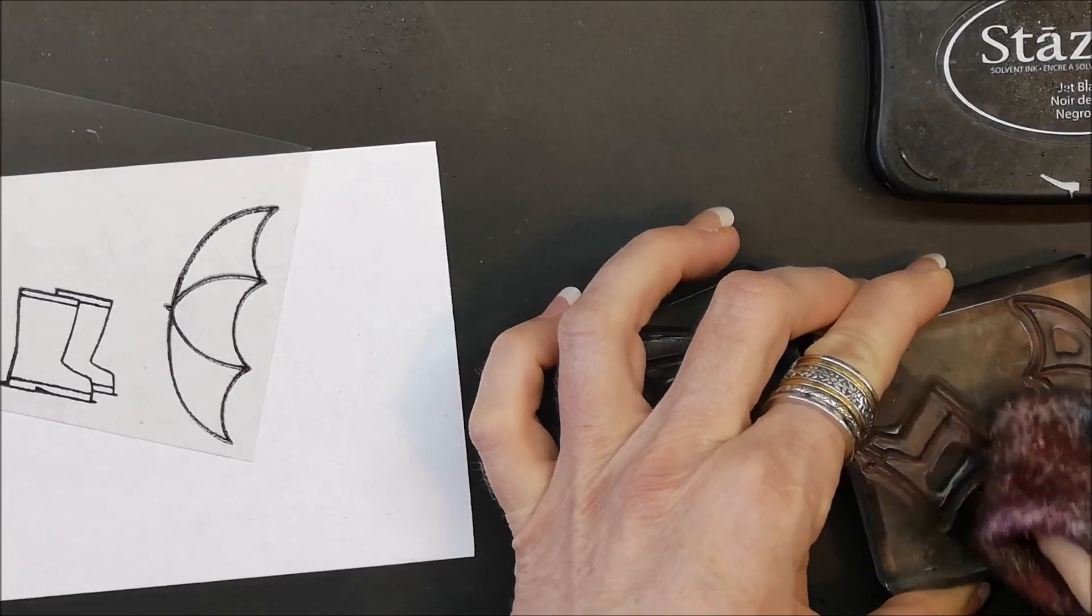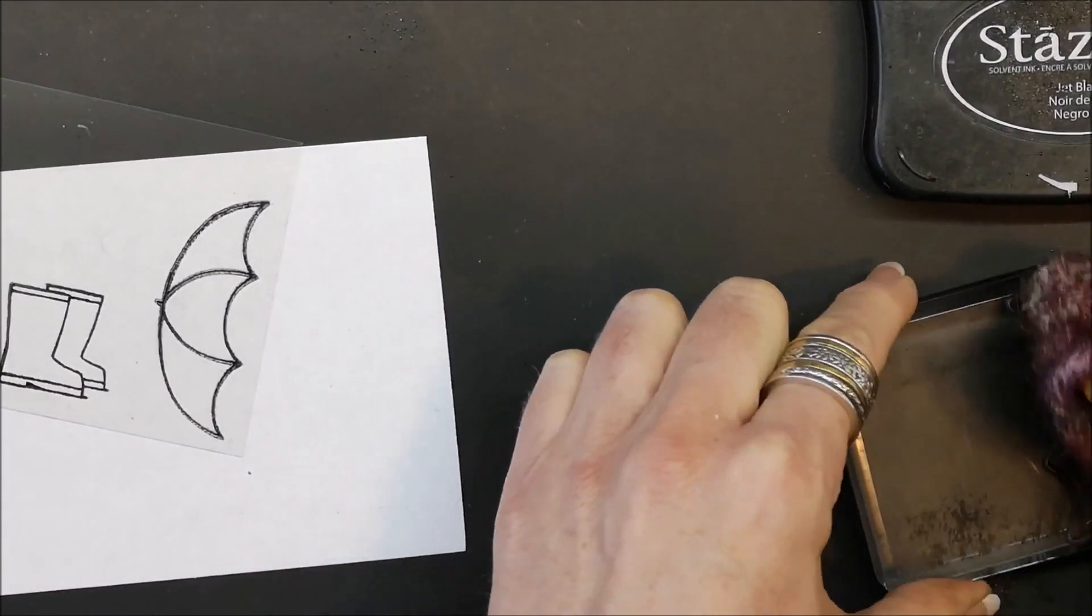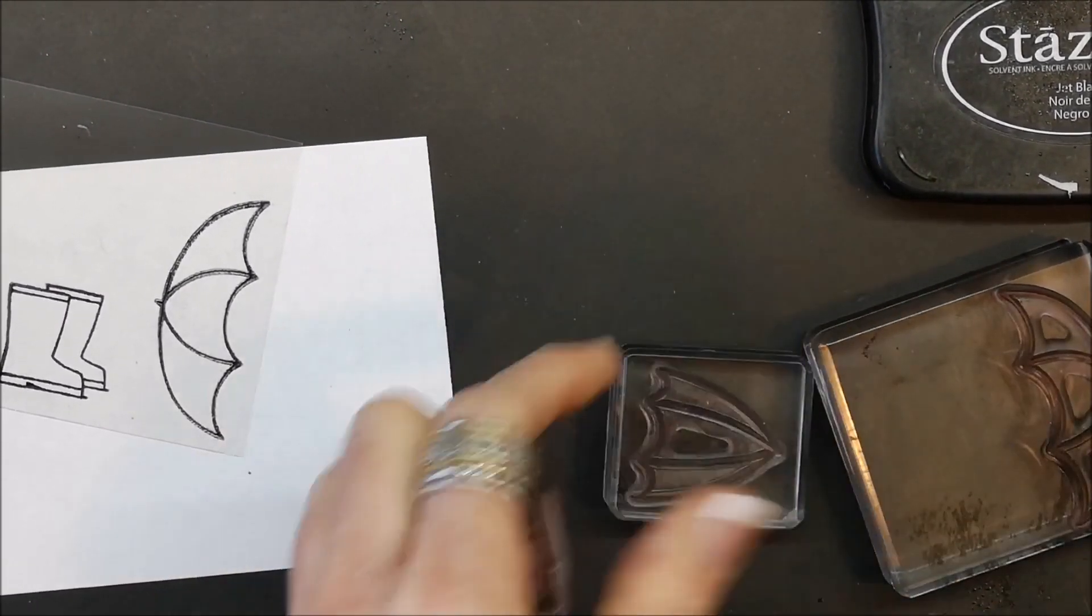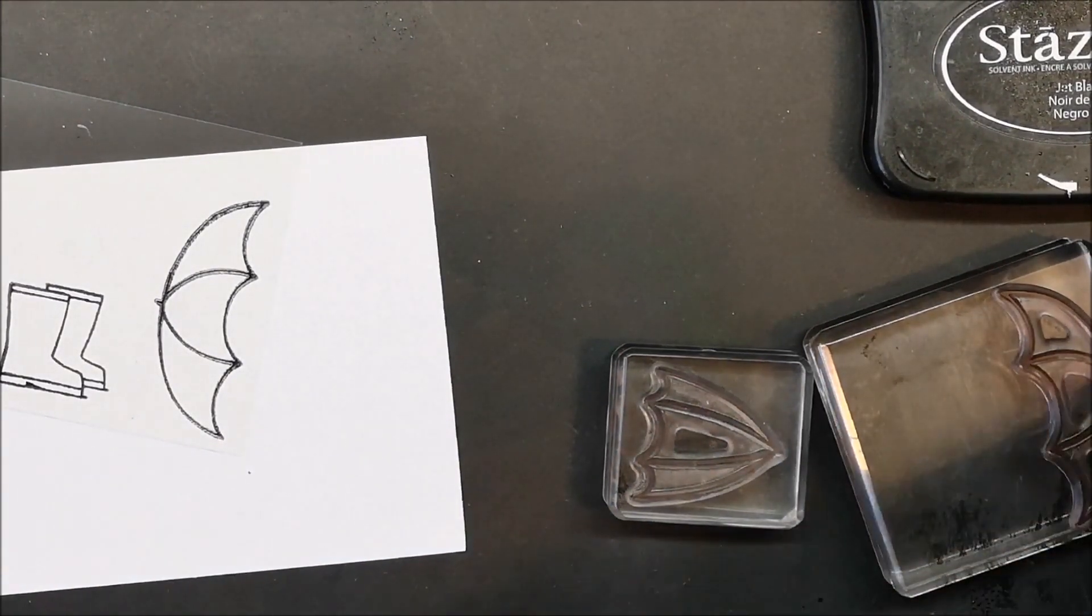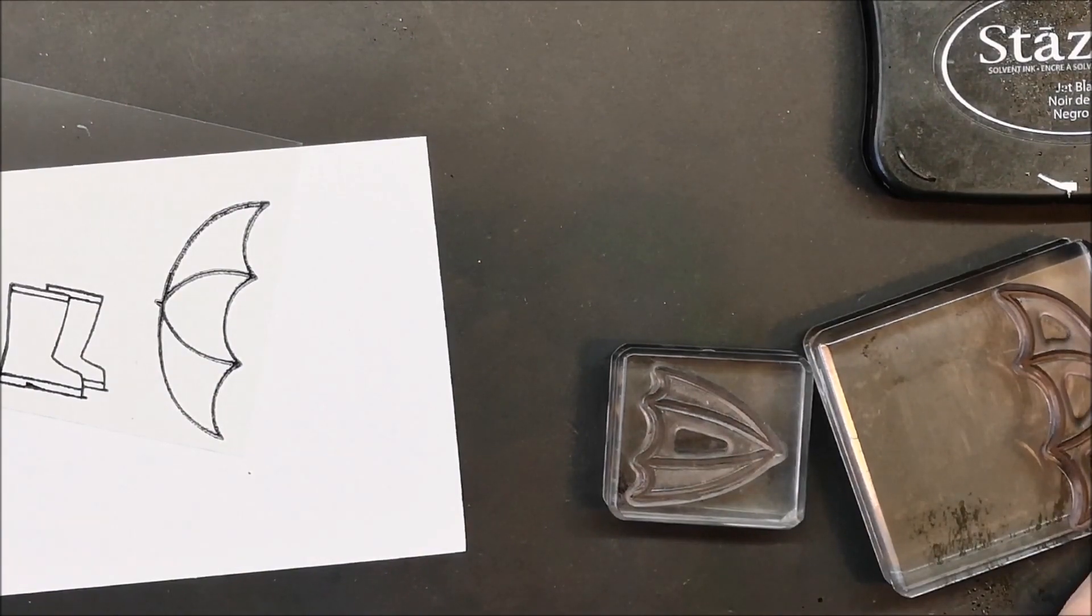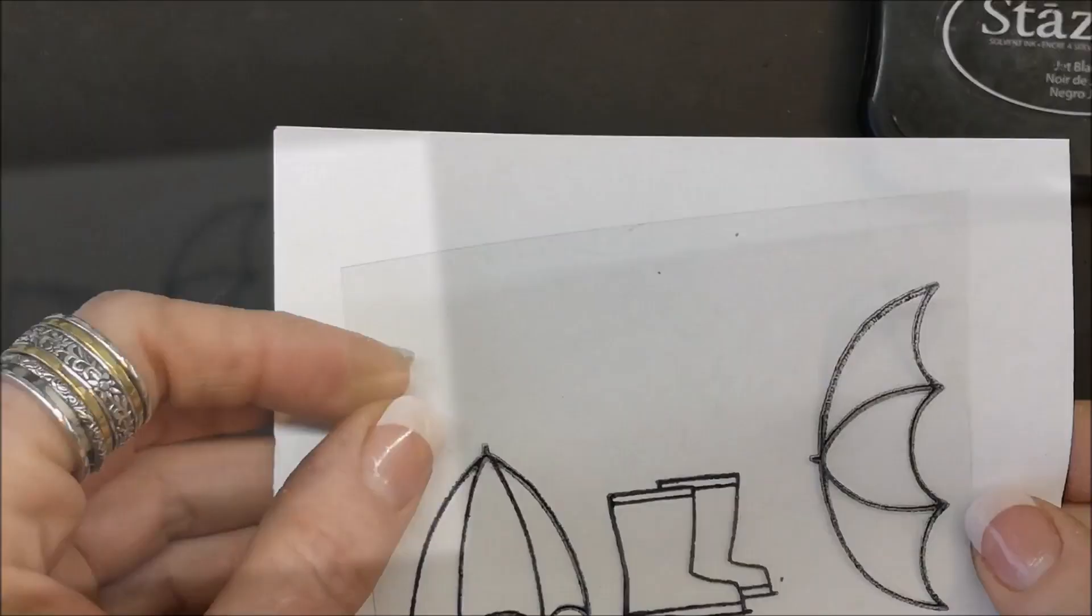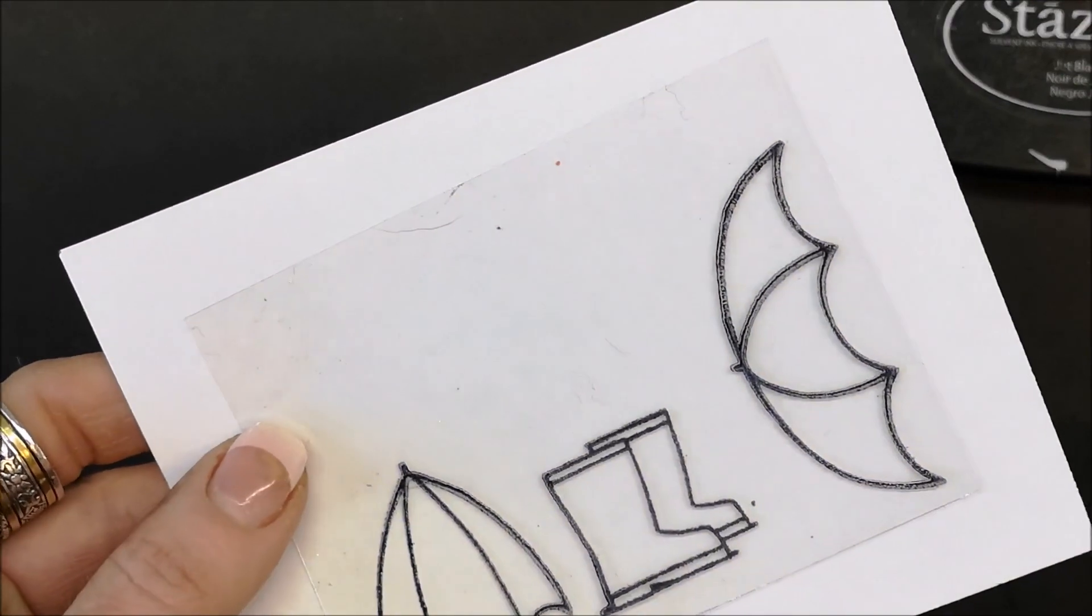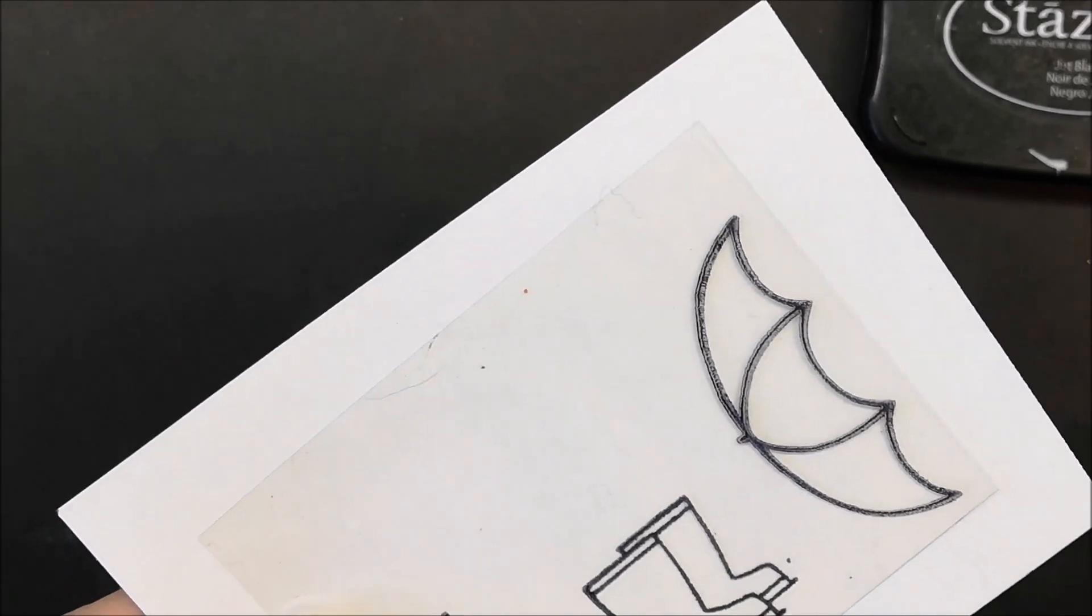If you live in Canada everything I'm demonstrating is available through my online store. All the links for the projects in this class are listed in the video description or on my blog. Now it's time to color. StazOn generally dries pretty fast but if you move your window sheet and see that it still looks a little bit wet, you want to give it a light zap of the heat tool.